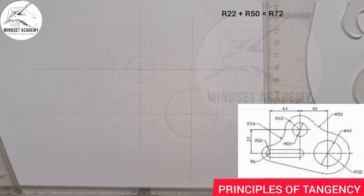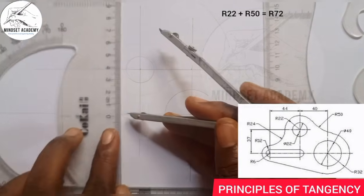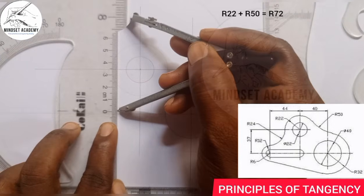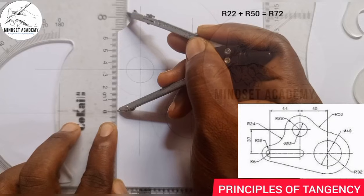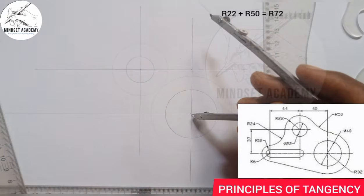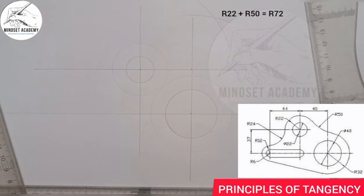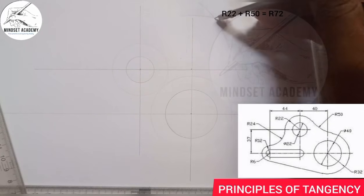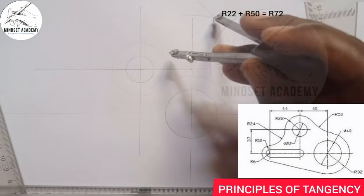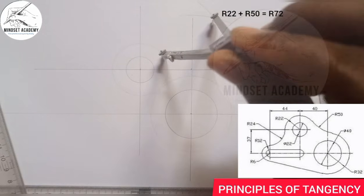Similarly, I'm going to add the radius of 32 with 50 also, since I'm pursuing this circle — 32 plus 50 gives us 82. I'll measure 82 — from 0, that's 80, 81, 82. I'll place it at the center here and strike an arc. Where the arcs meet, I'll place my compass on that intersection point and connect both of them.